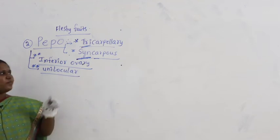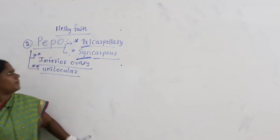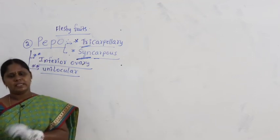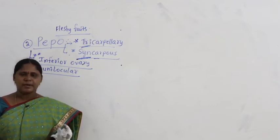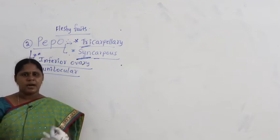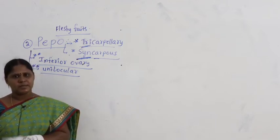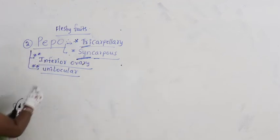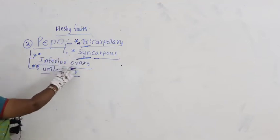Wherever inferior ovary is present, you need to recollect examples. For berry, we studied superior ovary and inferior ovary examples — solanum, lycopersicum, CDM, guava. Pepo means remember: tricarpellary, syncarpus, carpels are fused, inferior ovary, and unilocular.